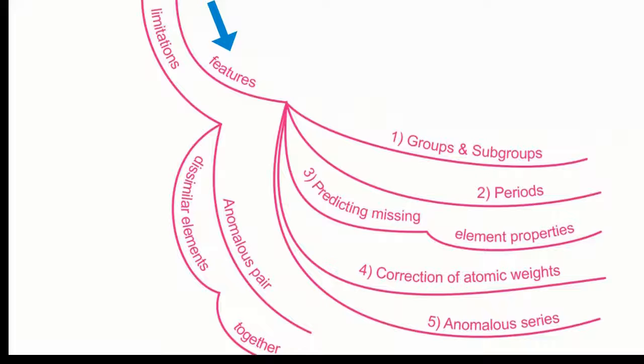Features of this periodic law are: first one, groups and subgroups. Second feature is periods. Third feature is predicting missing element properties. Fourth feature is correction of atomic weights. And the fifth feature is anomalous series.